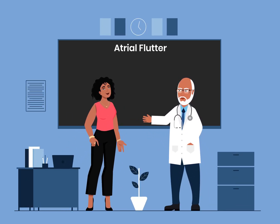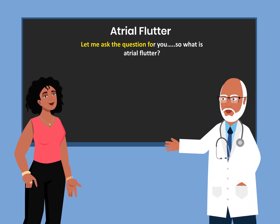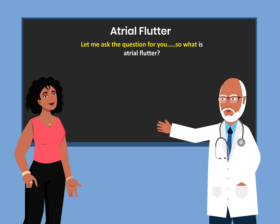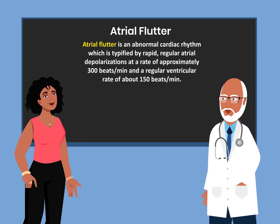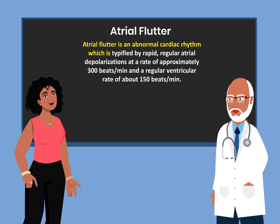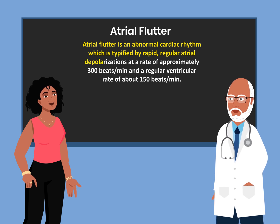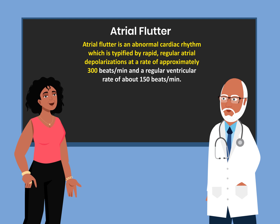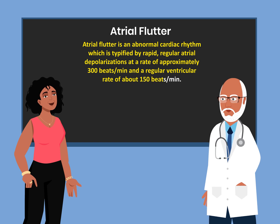Today I want to talk with you about atrial flutter. So what is atrial flutter? Atrial flutter is an abnormal cardiac rhythm which is typified by rapid regular atrial depolarizations at a rate of approximately 300 beats per minute and a regular ventricular rate of about 150 beats per minute.